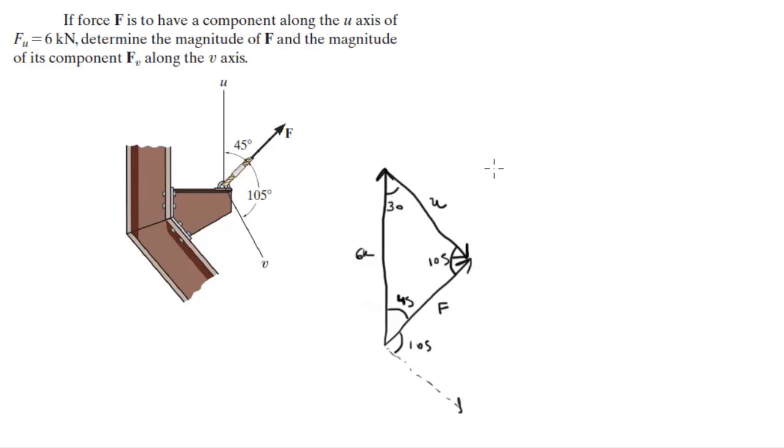So now we're going to use the law of sines to find the other two sides. The law of sines says that A over sine of angle A is equal to B over sine of angle B, which is equal to C over sine of angle C. When you plug in the numbers, you know that 6k over sine of 105 is equal to...